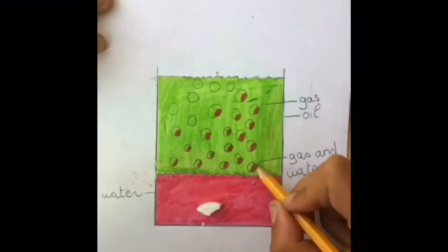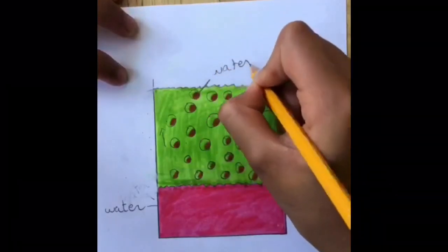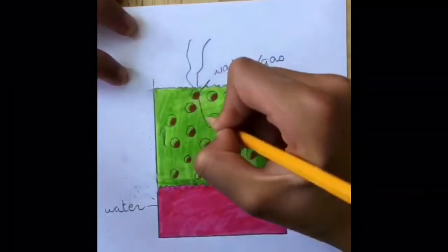When the blob of water and gas reaches the top, the gas escapes and down goes the water.